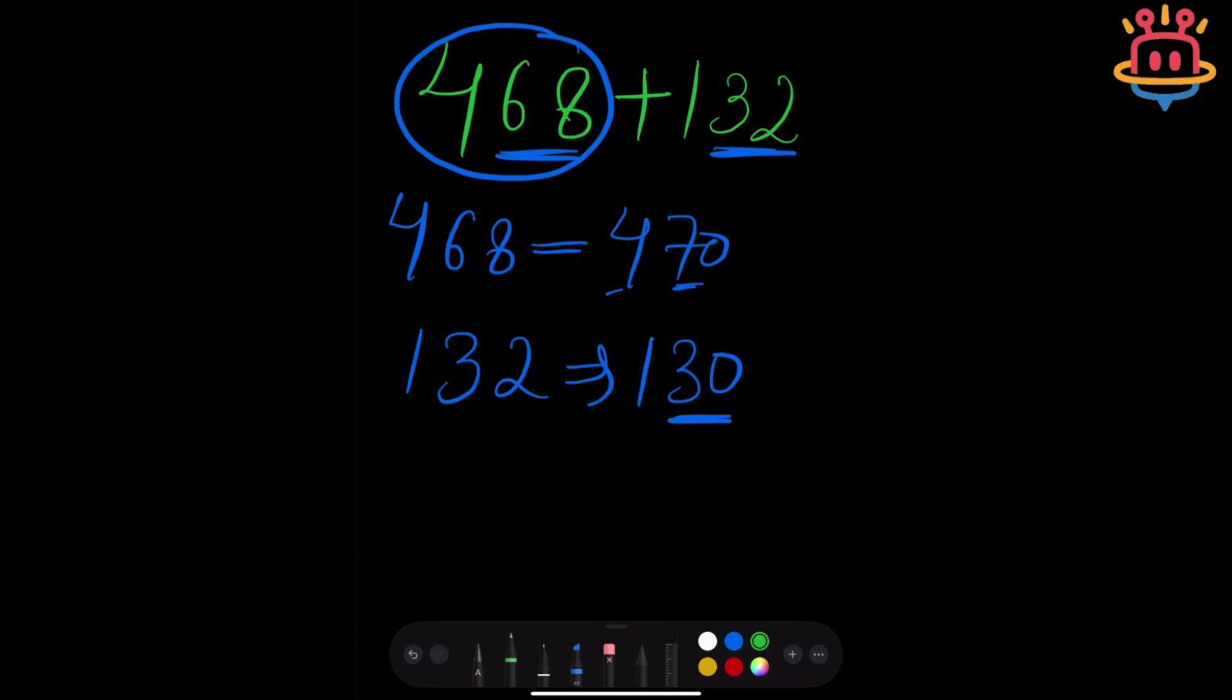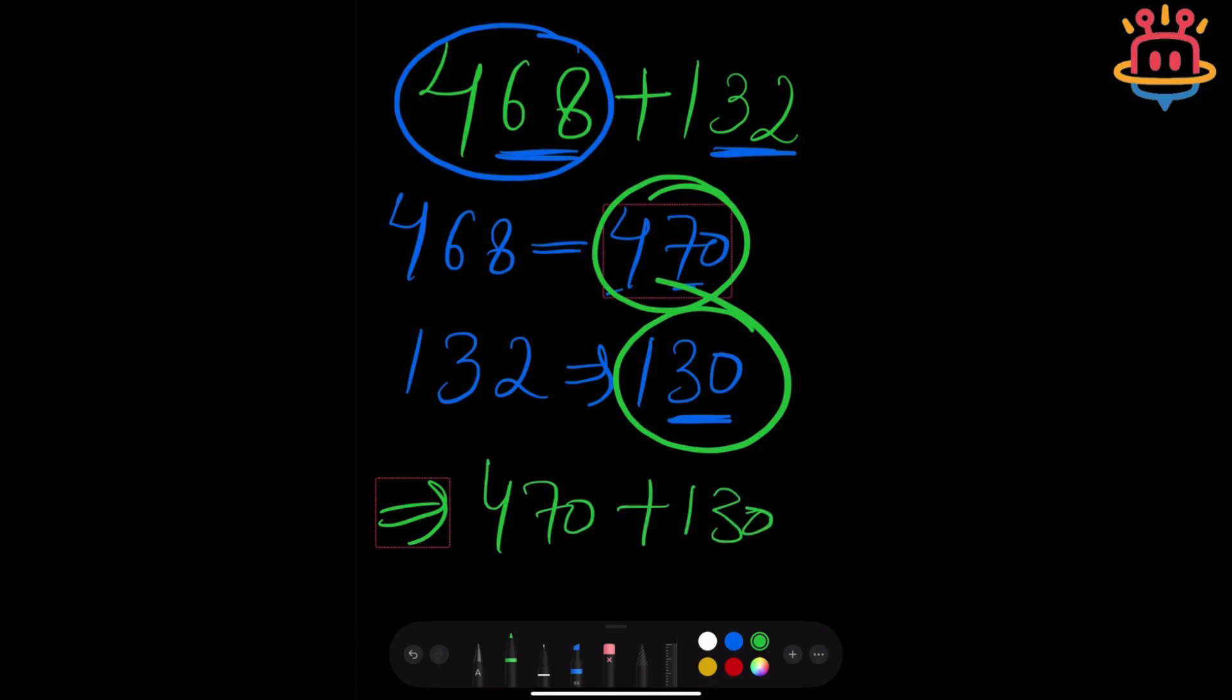Need to add both of these numbers together: 470 and 130. See, our question has become so simple and easy! Calculation is so easy here: 600. Super quick, super fast, and super fun! Don't you think so? This is the estimation technique.